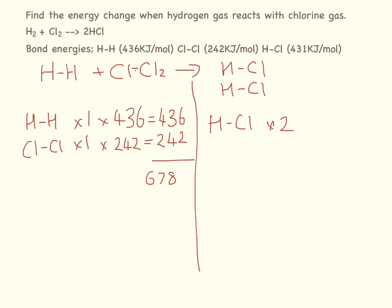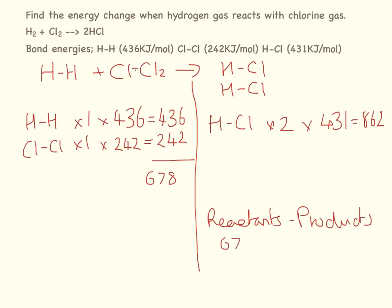The H-Cl bond energy is 431 kJ/mol and we have two of those, so 431 × 2 = 862 kJ/mol for the product side. Now the final calculation — reactants minus products: 678 − 862 = −184 kJ/mol. Because this is negative, we know this is an exothermic reaction.